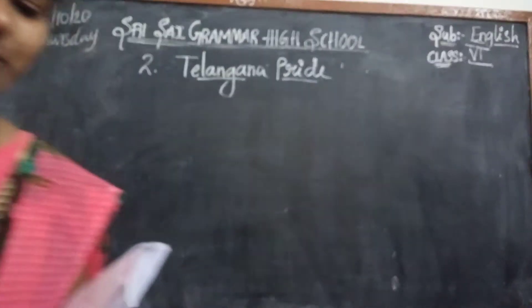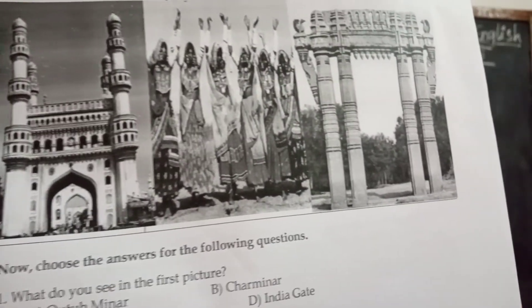Before going to the second lesson, everyone open your textbooks and see the picture interaction we do now. What are the pictures you are seeing? Some of their performances, doing the performance, and also Charminar. The Warangal statue, that is a monument also, we can observe here. What do you see in the pictures?